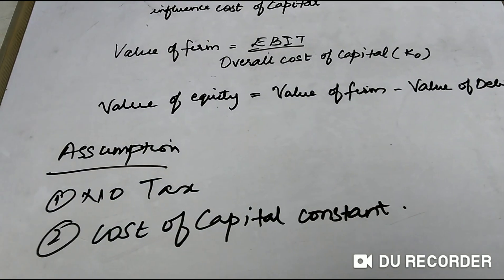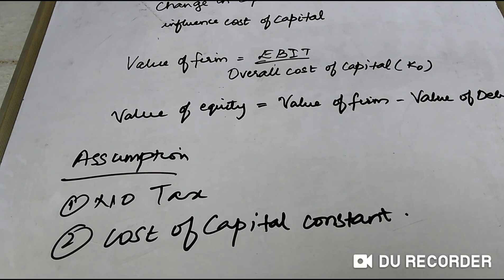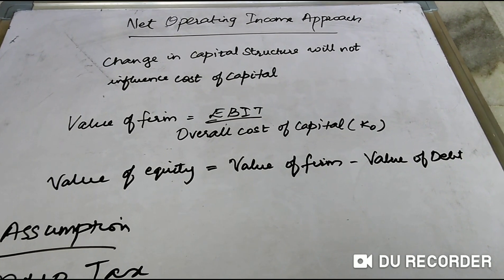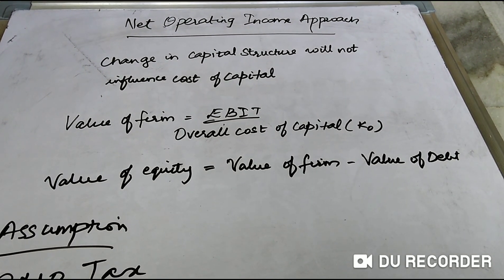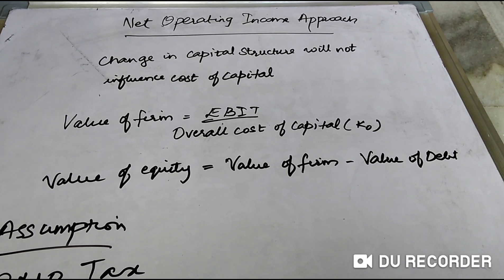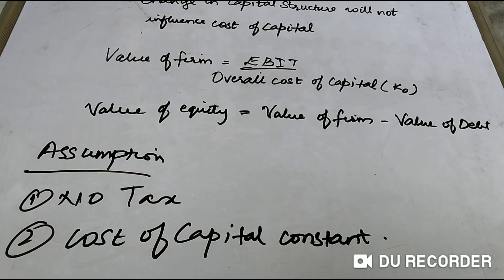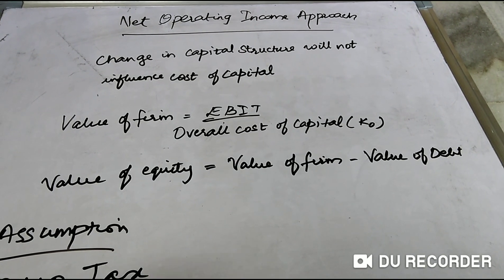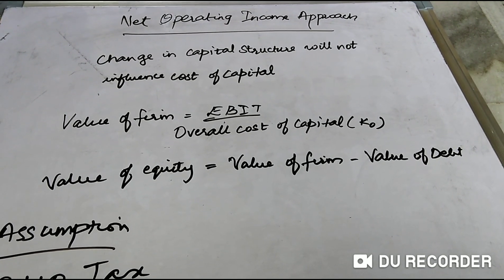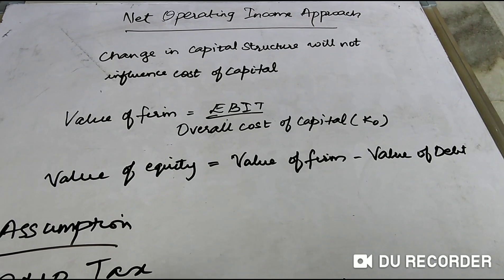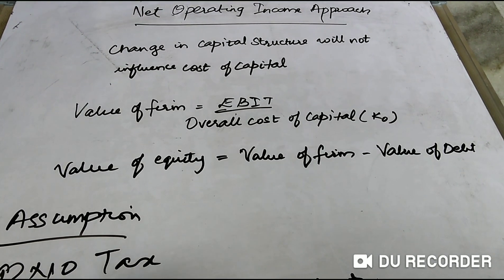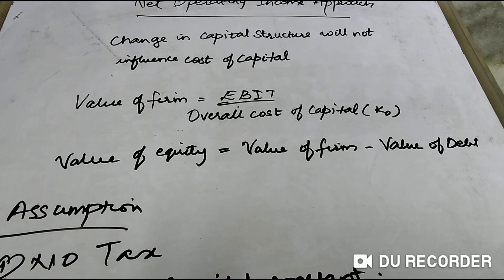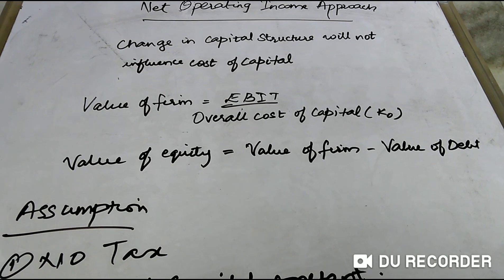The second assumption is that cost of capital is constant. That means in these problems you need not calculate or check whether it is increasing or decreasing. Cost of capital is the amount you pay back to the people from whom you have taken funds — and here it remains constant. You need not calculate it separately; it will come together in the problem.